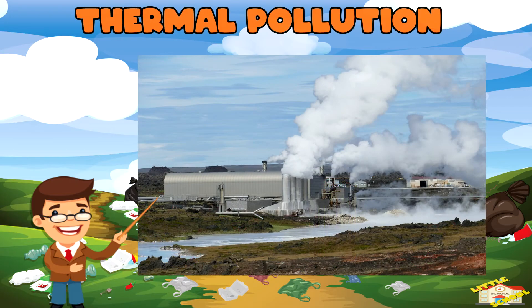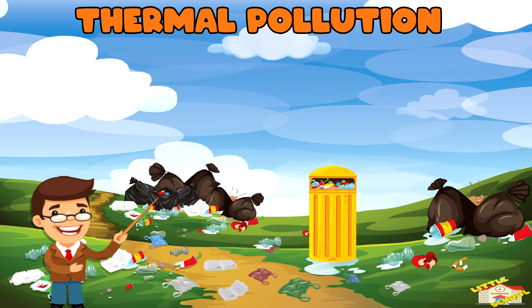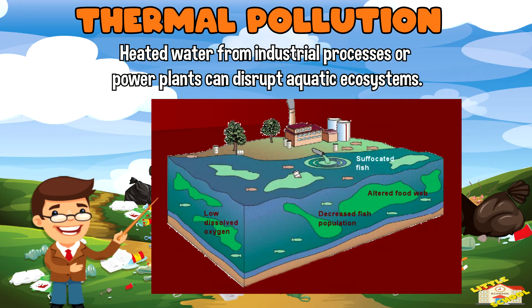Thermal pollution refers to the alteration of natural water temperatures in rivers, lakes, or oceans due to human activities. Discharge of heated water from industrial processes or power plants can disrupt aquatic ecosystems.